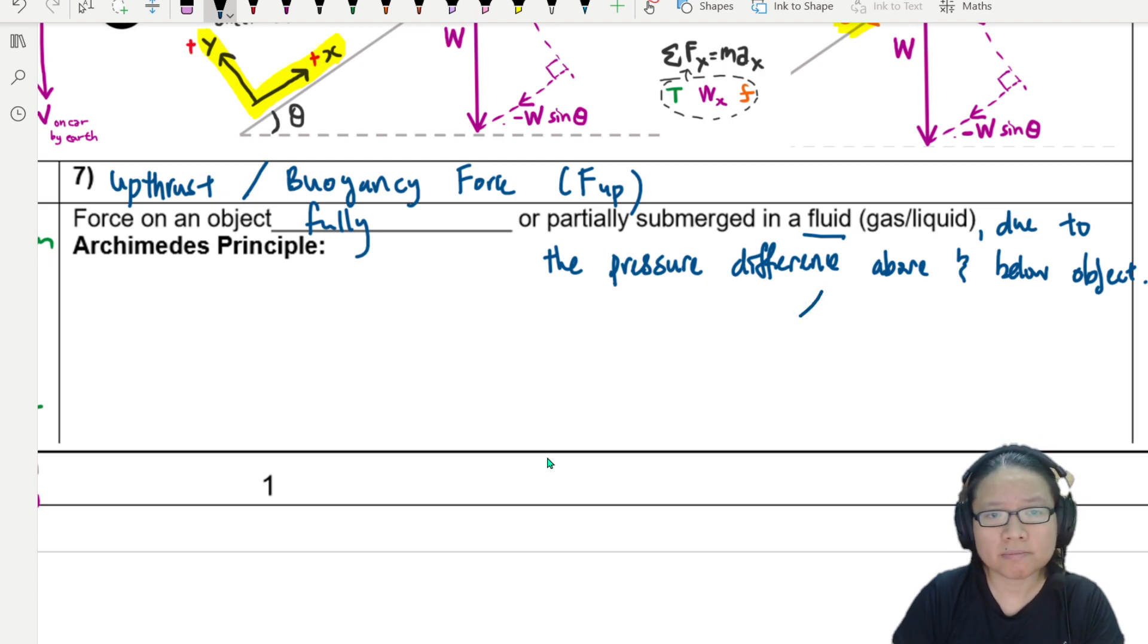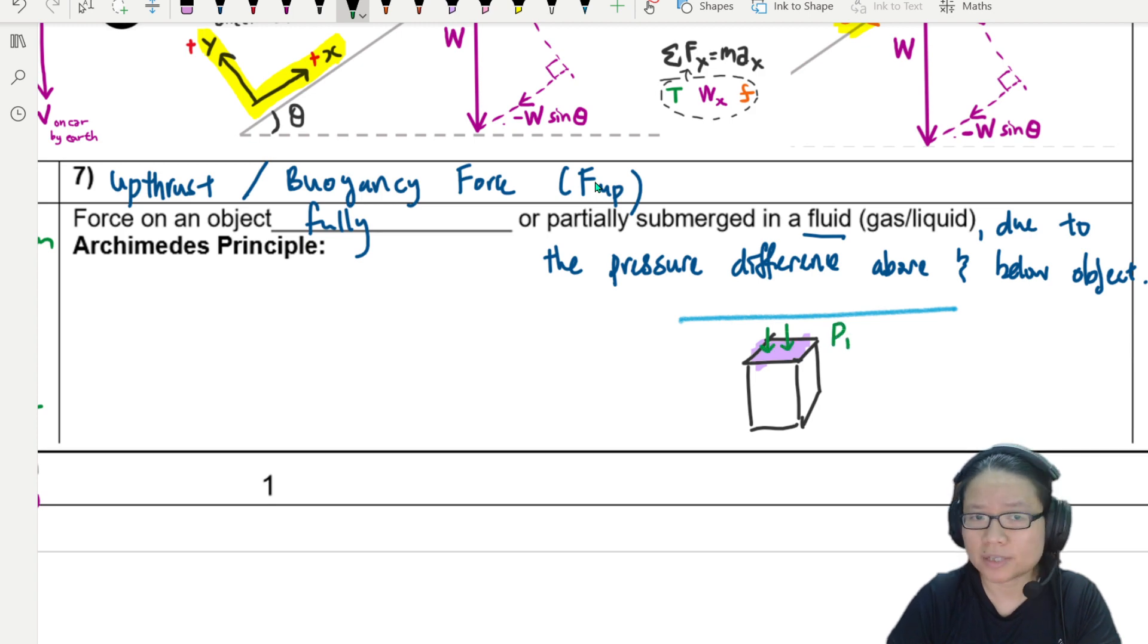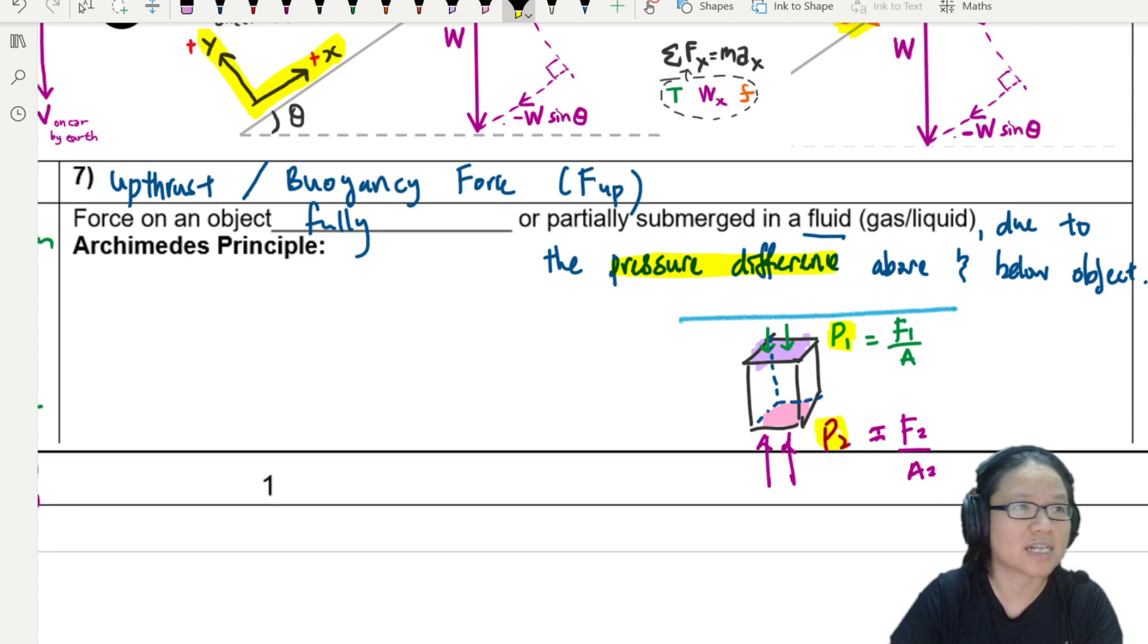All right, so this one will be, let's say, for example, I have some water. Then maybe I have a box here. So it's a box because they're easy to draw. So the pressure of the upper face, this top face here, this pressure, let's say I call this P1. Like the objective question, this is P1, which is equal to F1 over A. And then down here, let's say we talk about this surface, and then this one is P2. So P2 is equal to F2 over A2.